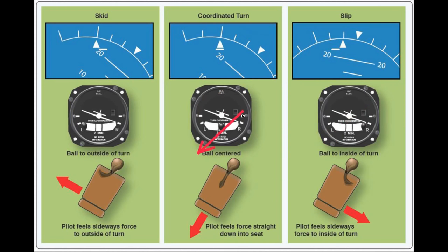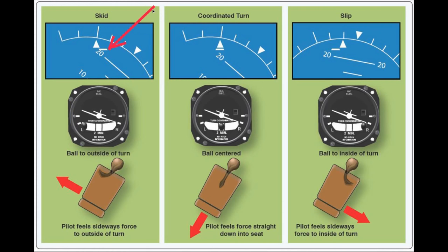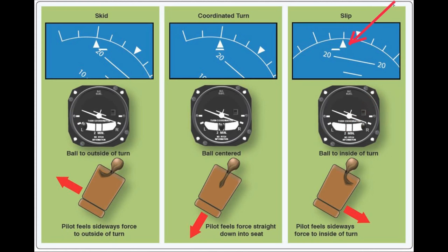Now if you don't have a turn coordinator but you have a glass cockpit, you will notice that this little dash below the pyramid has slipped off to the right. In this case you would still add left rudder to bring this back. Here we have coordinated flight and here we have a slip — it's pretty much the opposite of the turn coordinator but it works the same way. You want to bring this back to center to get into coordinated flight.